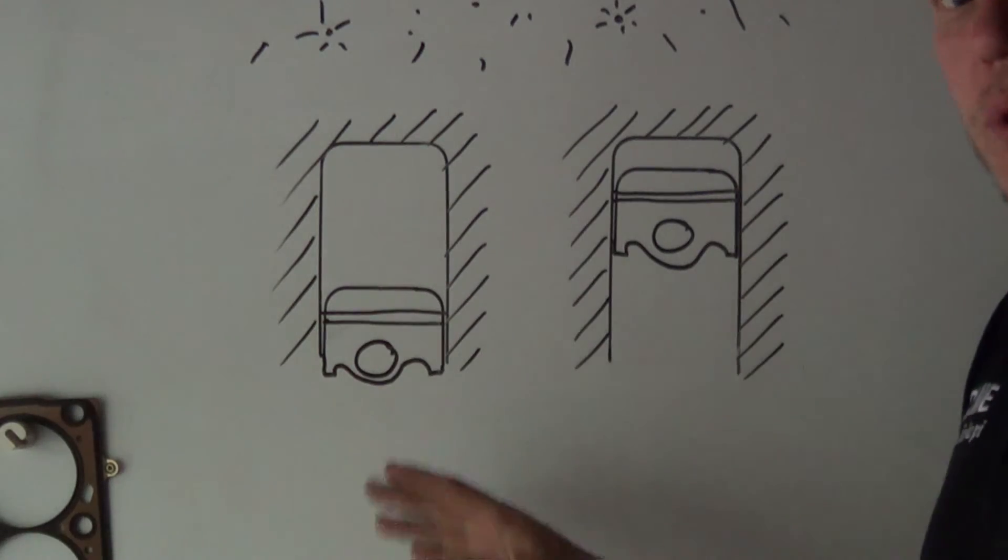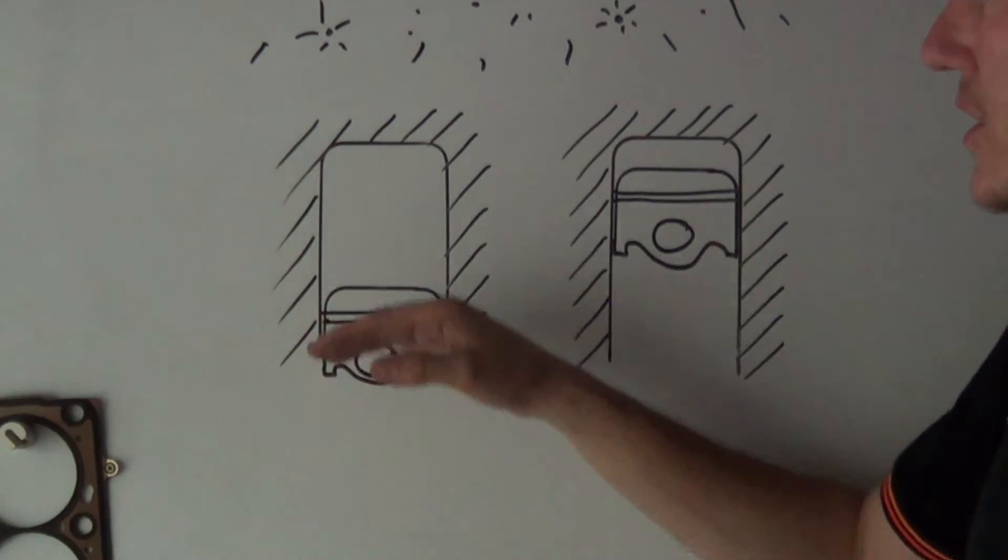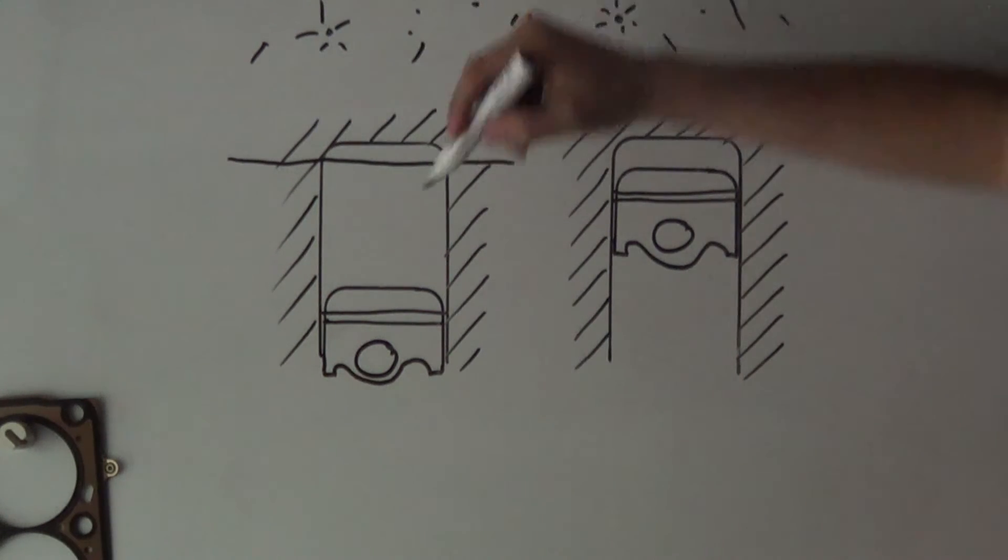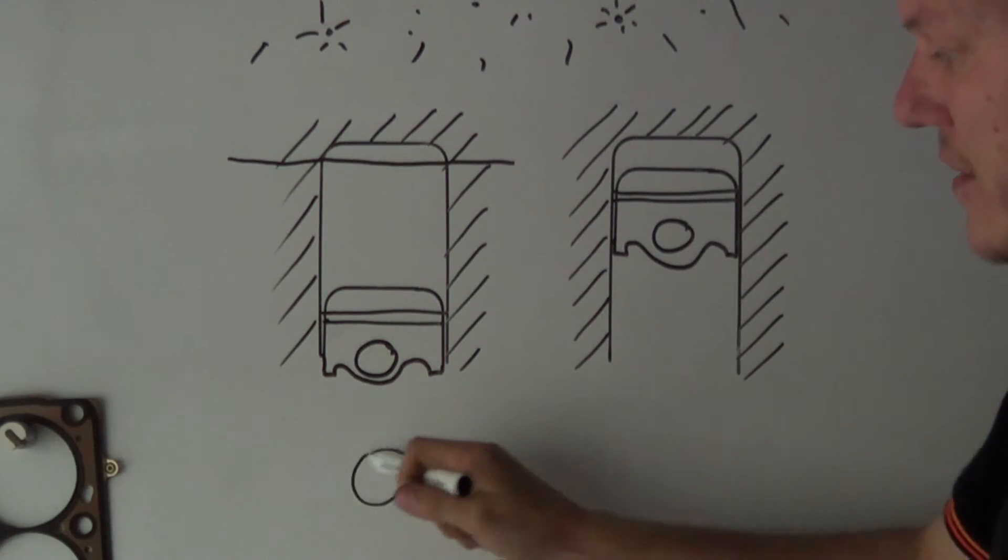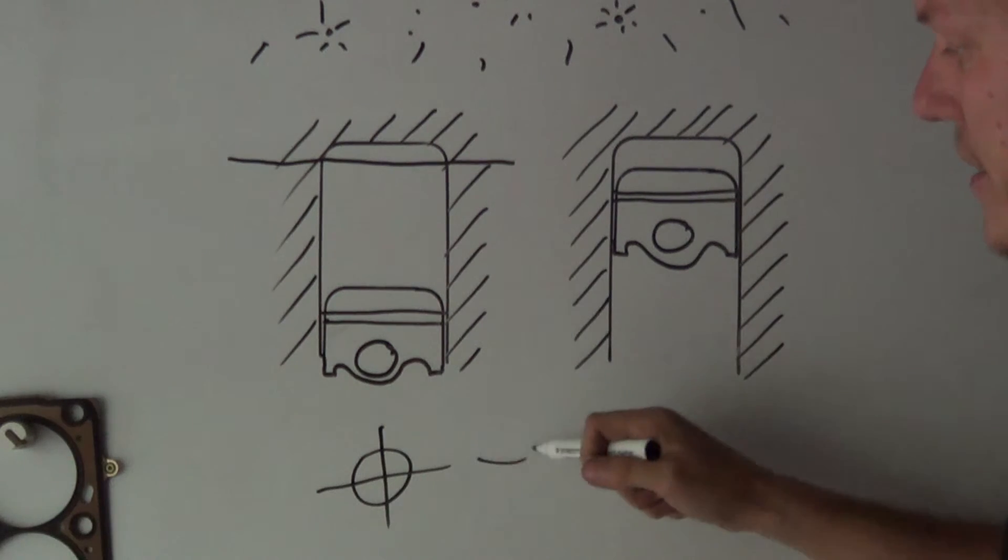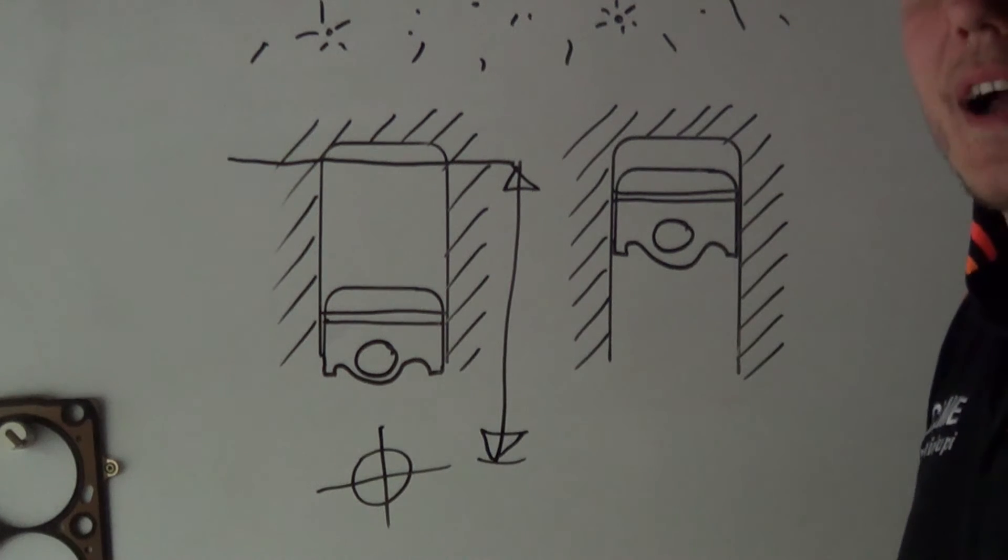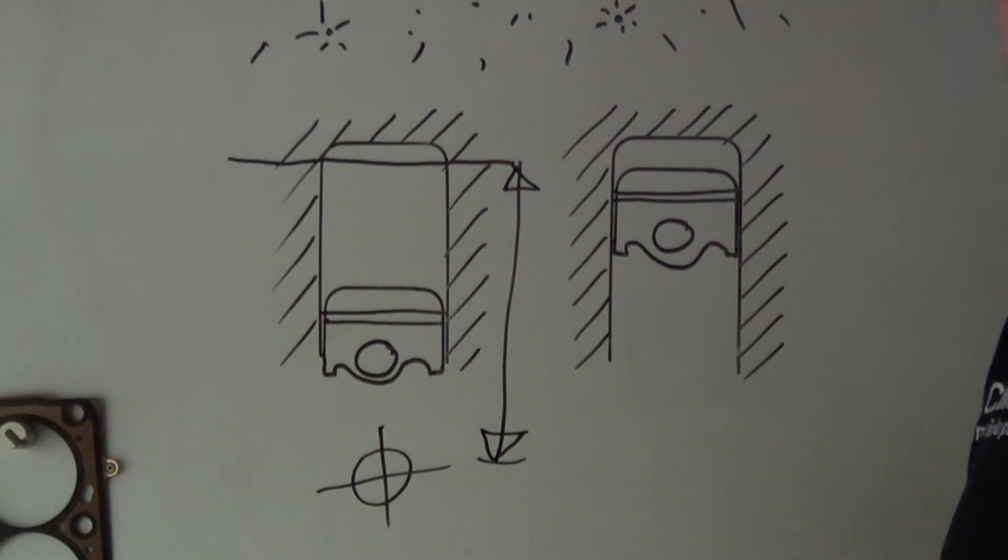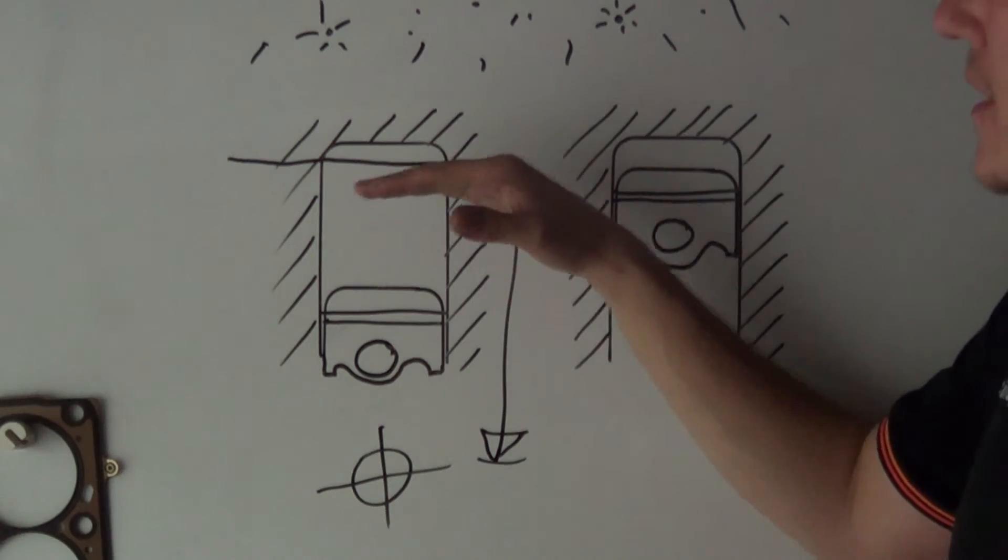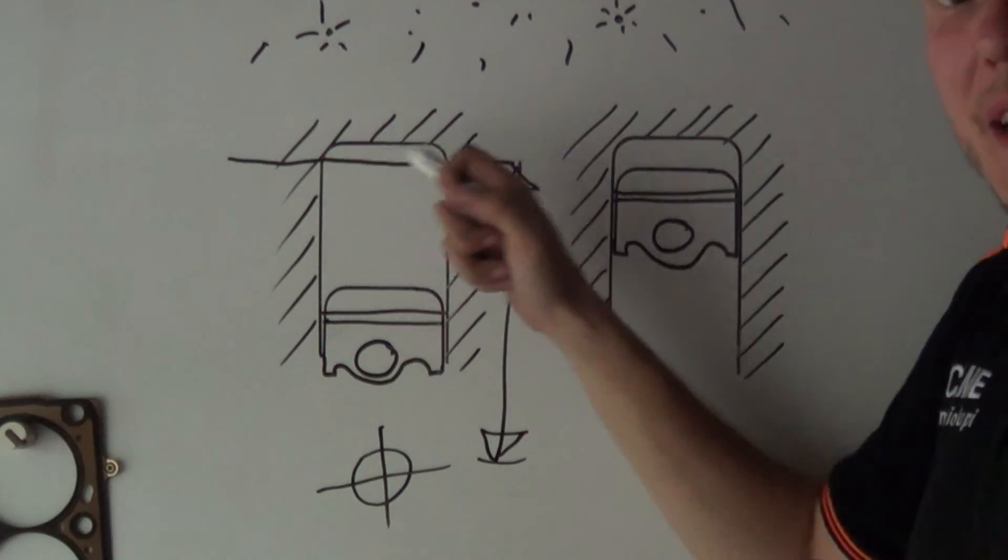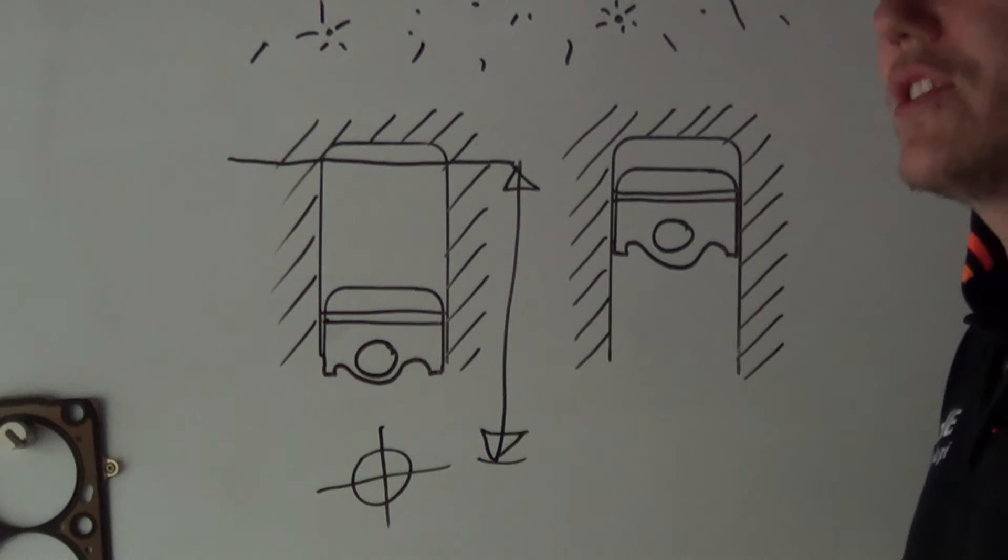This is controlled by two things. This is controlled by the distance from the top of the cylinder to the center of the crankshaft. This distance is your cylinder top height, or your head deck height.